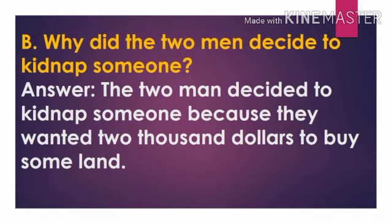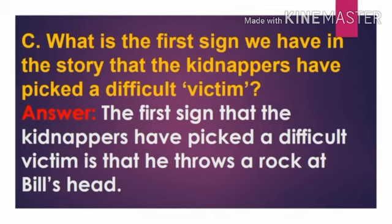Now we will move towards Part C: What is the first sign we have in the story that the kidnappers have picked a difficult victim? The first sign was that when Bill went to take him, the child threw a stone at his head. So the first sign that the kidnappers picked a difficult victim is that he threw a stone at Bill's head.